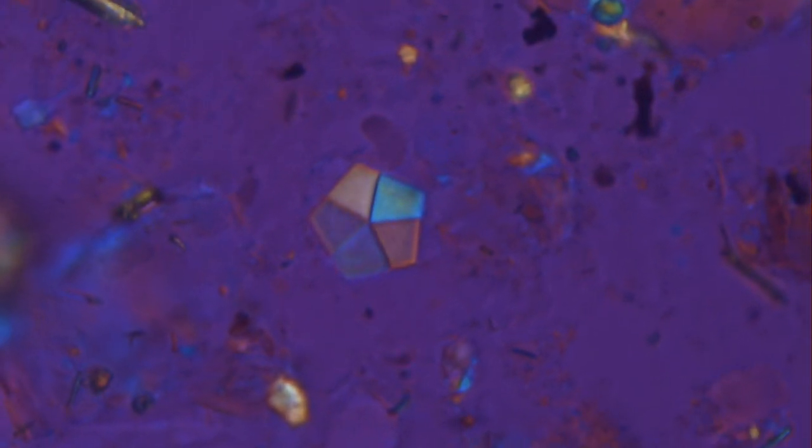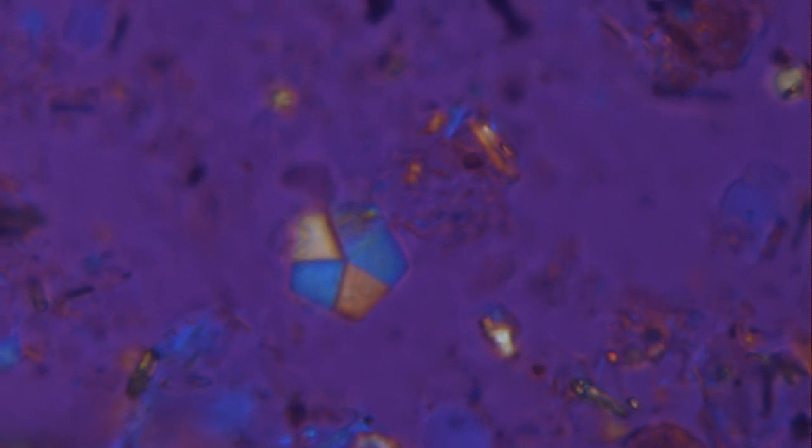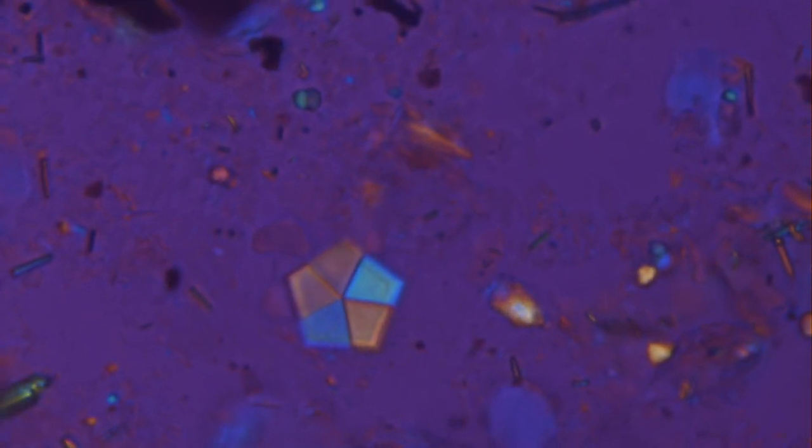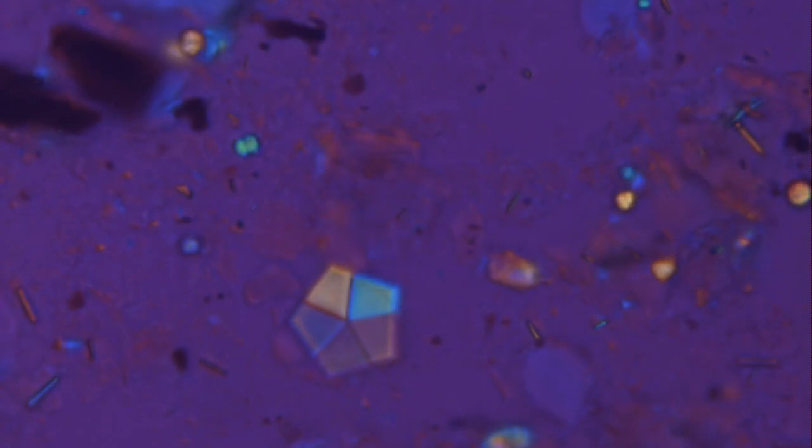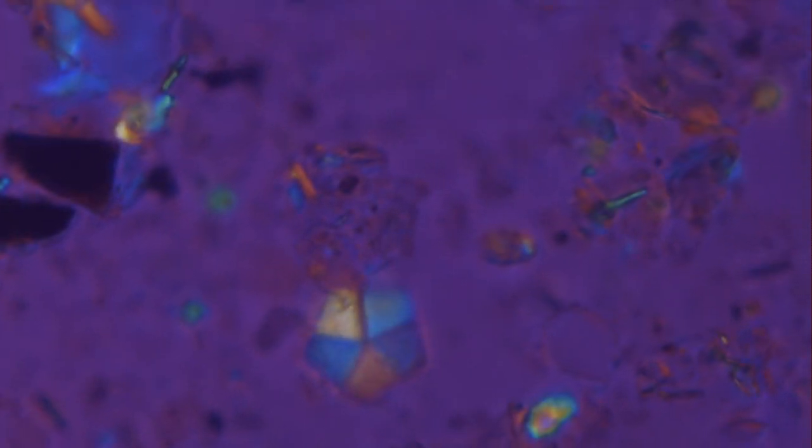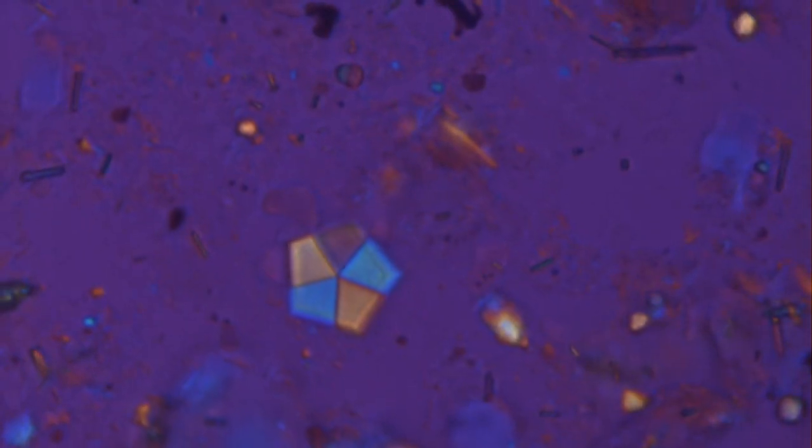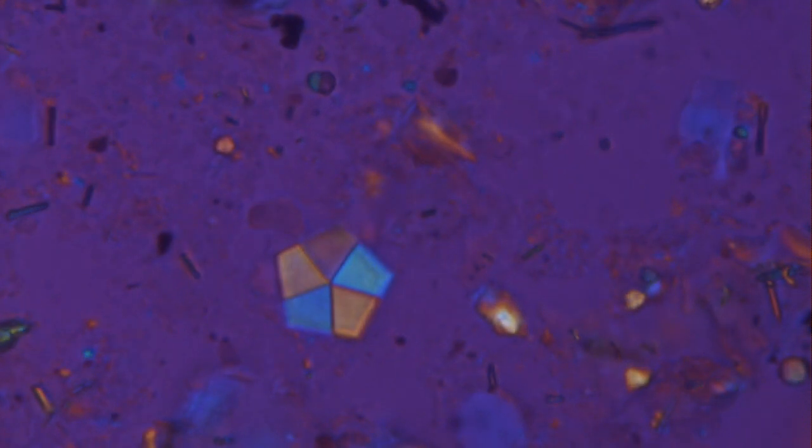For calcareous nanofossils, the mineral is almost always calcite. But even in these cases, the gypsum plate may be useful to distinguish different sets of crystallites apart, by evidencing distinct optical orientations between them. Let's test this, shall we?